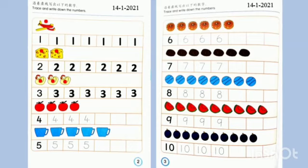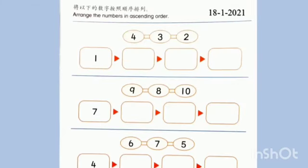Next, please turn your textbook to page 4. Arrange the numbers in ascending order. And please don't forget to write the date. Here we have number 4, 3, and 2. And here we start from number 1. After 1 is 2.